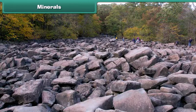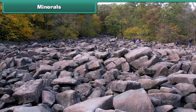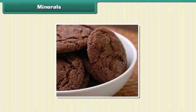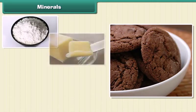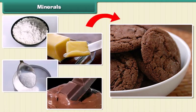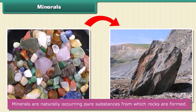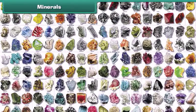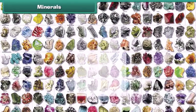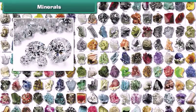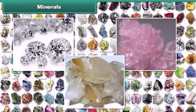Minerals. We have learned about rocks — all rocks are made of minerals. Wondering what minerals are? Think of a chocolate cookie as a rock. The cookie is made of flour, butter, sugar, and chocolate. The cookie is like a rock and the flour, butter, sugar, and chocolate are like minerals. Thus, minerals are naturally occurring pure substances from which rocks are formed. There are about 3,000 different minerals in the world, among which diamond is the hardest. Quartz and calcite are two common examples of minerals.